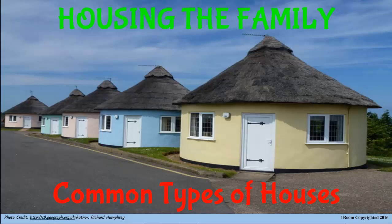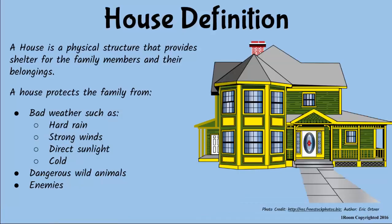Jim asks: "Mom, look over there. Are those houses too?" His mother explains that if they are physical structures that provide shelter for families and their properties, then yes, they are houses. They may look different, but they still protect families from rain, cold, strong winds, wild animals, and thieves.